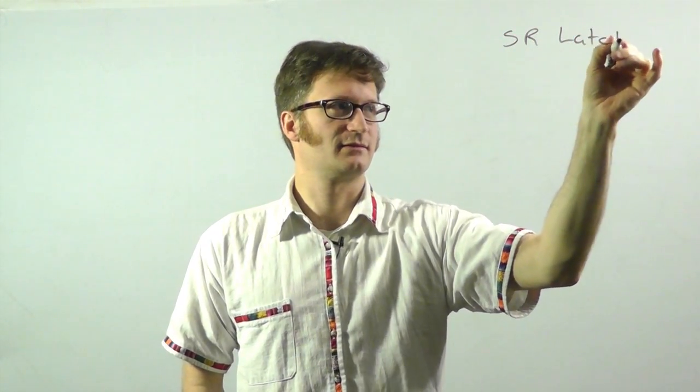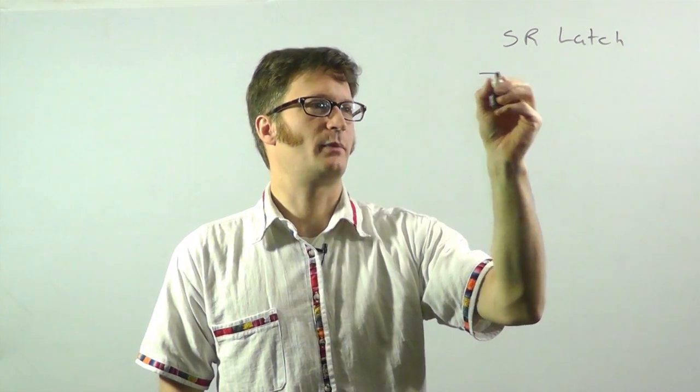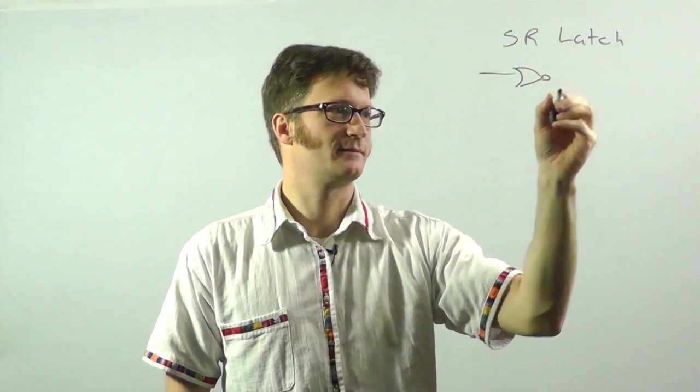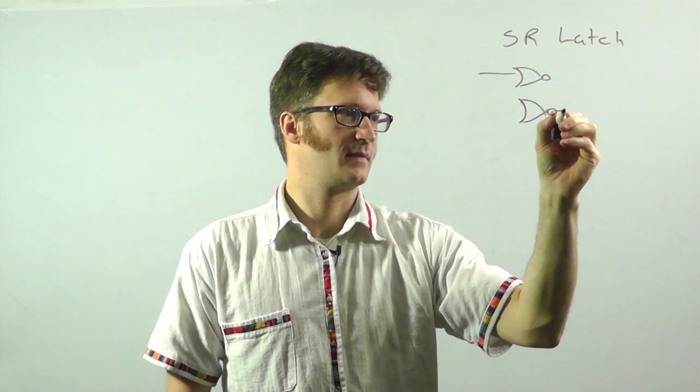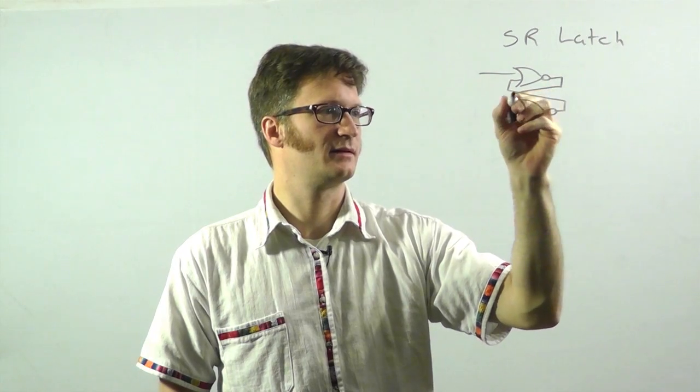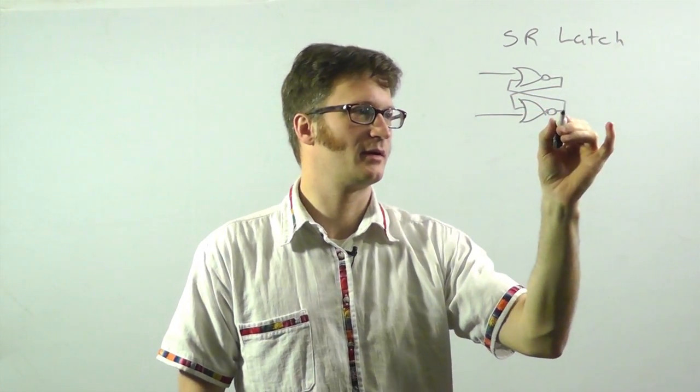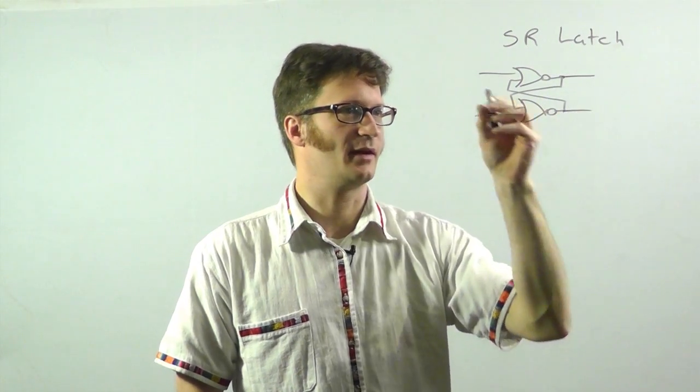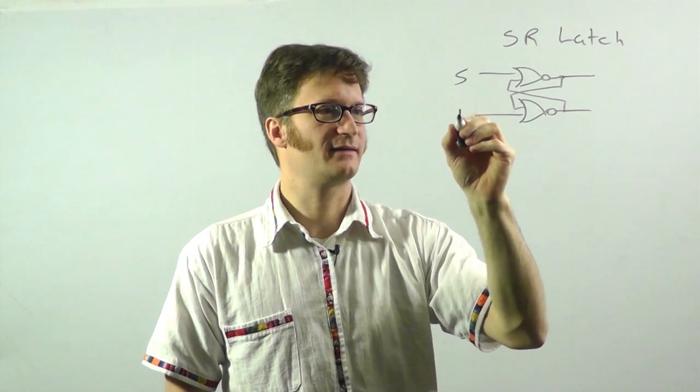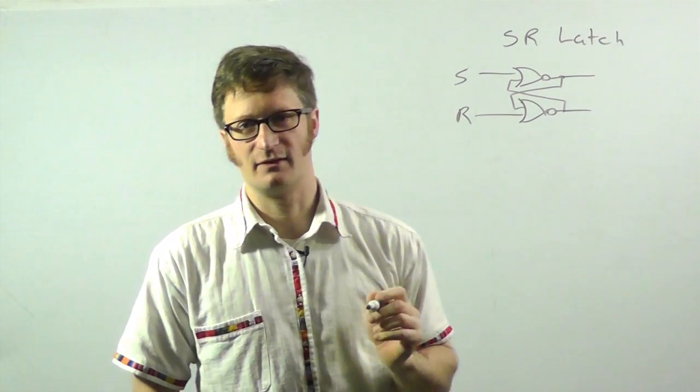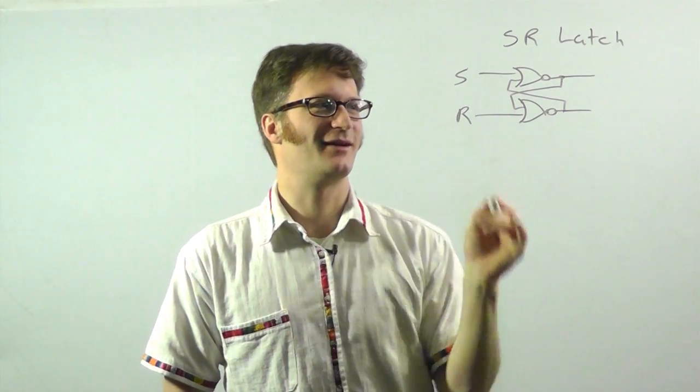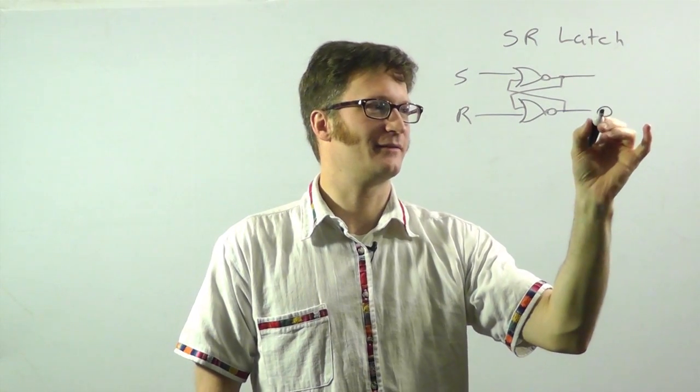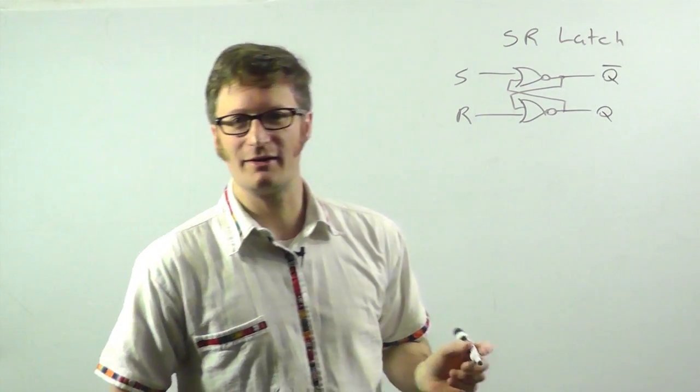The first thing I'm going to start out with is latches, and the simplest of them is the SR latch. An SR latch is made up of a pair of NOR gates and they're cross-wired like this, which allows them to remember the input that was put onto them. We have S and R, S stands for set and R stands for reset. And we have Q and Q bar.